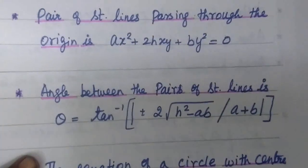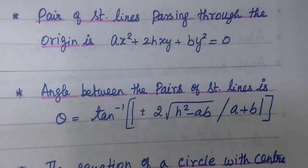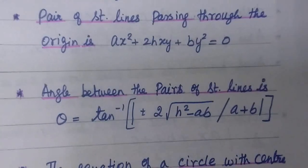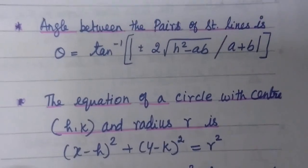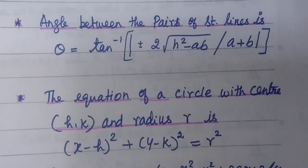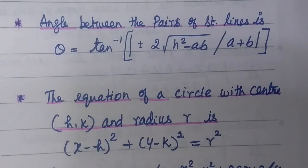For the angle between the pair of straight lines: theta equal to tan inverse of modulus of 2 root of (h squared minus ab) divided by (a plus b). Next one: the equation of a circle with center at (h, k) and radius r is (x minus h) whole square plus (y minus k) whole square equal to r squared.